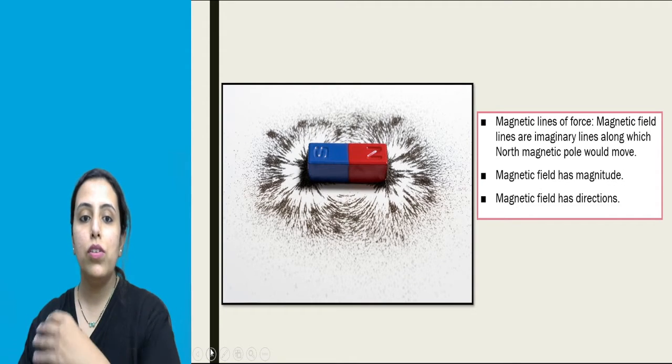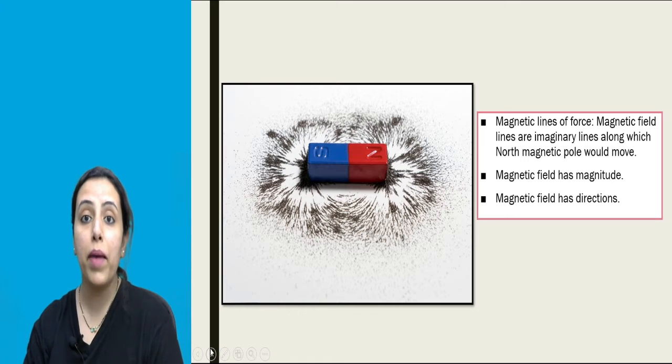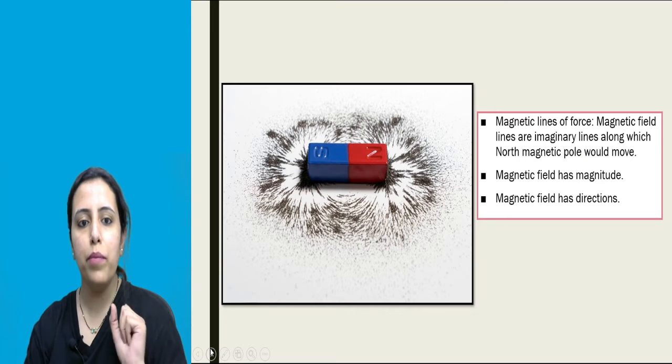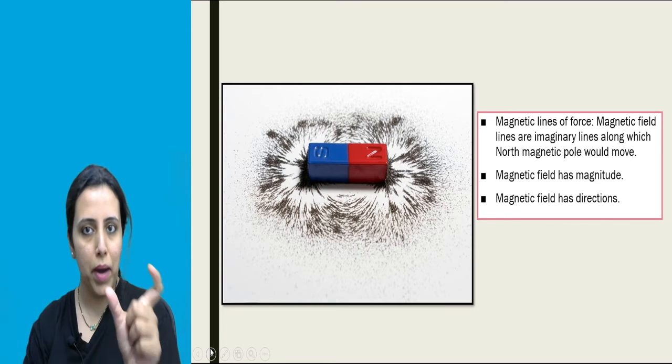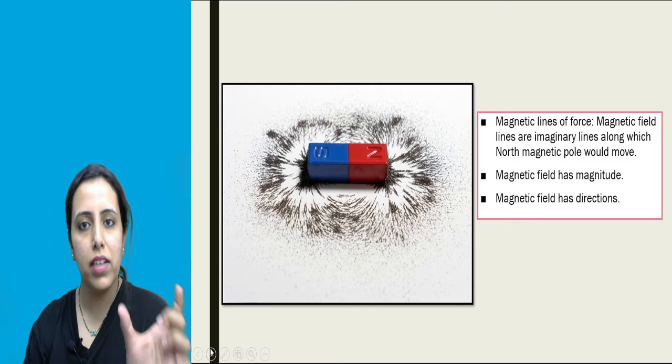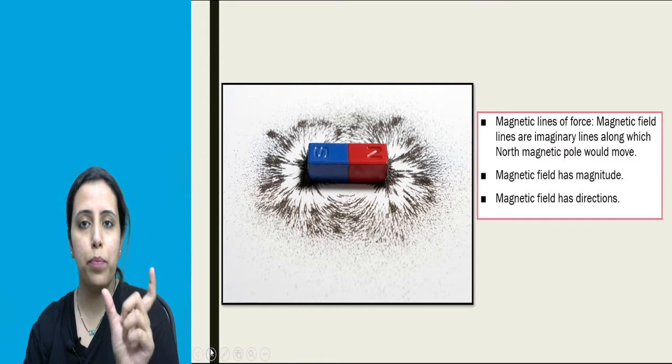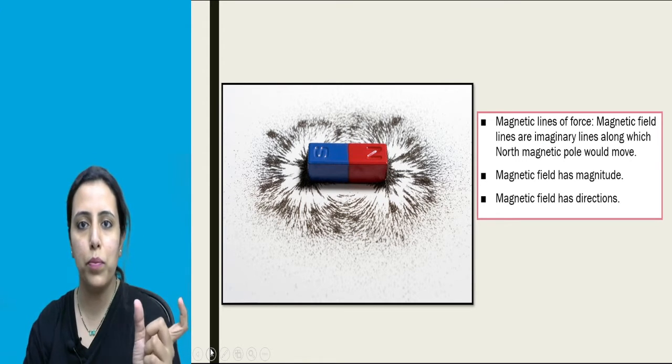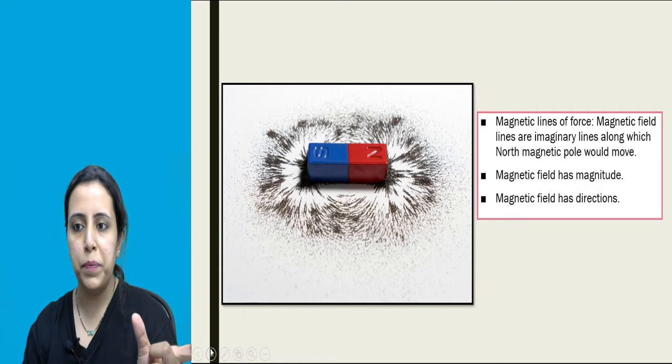Here, as I said previously, magnetic lines of force. In this particular diagram, picture you can see, bar magnet is there. It is a kind of permanent magnet with poles that are fixed - N pole, south pole, North pole and south pole.